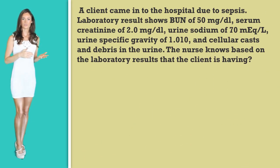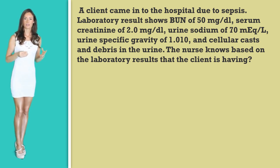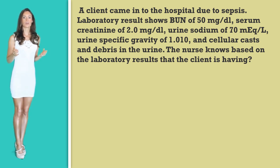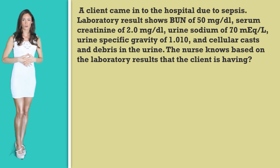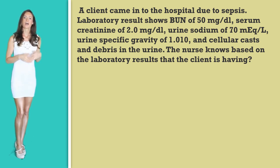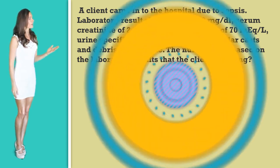Question number four. A client came to the hospital due to sepsis. Laboratory values show a BUN of 50 milligrams per deciliter, a serum creatinine of 2 milligrams per deciliter, a urine sodium of 70 milliequivalents per liter, a urine specific gravity of 1.010, and cellular cast and debris in the urine. The nurse knows based on these laboratory results that the client is having which type of renal failure?